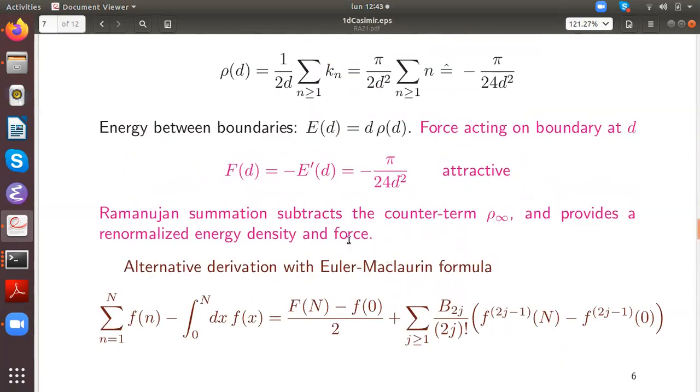If we insert his value minus one-twelfth, we get this energy density, so this is then the energy between these points. And if we take its negative derivative, we obtain the force acting on the boundary at d, which in this case is an attractive force.